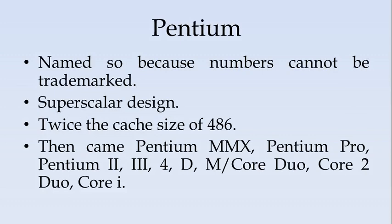Next came the Pentium. After the 486, there were issues with trademarking, because numbers like 8086, 80186, 286, 386 cannot be trademarked. To avoid this problem, Intel started giving names to their processors, which is why it is called the Pentium.